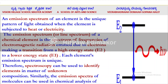What is an emission spectrum? The emission spectrum of an element is a unique pattern of light emitted when the element is subjected to heat or electricity. The emission spectrum of a chemical element is the spectrum of frequencies of electromagnetic radiation emitted due to electrons making a transition from a high energy state to a low energy state. Therefore, spectroscopy can be used to identify elements in matter of unknown composition. Similarly, the emission spectrum of molecules can be used in chemical analysis.